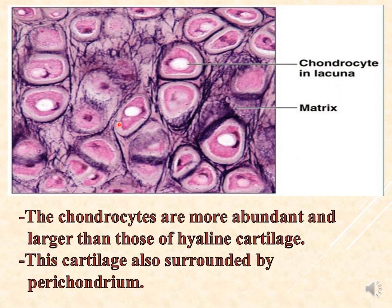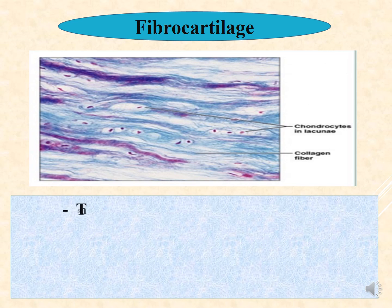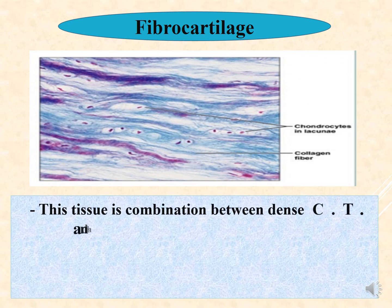Elastic cartilage also differs in the arrangement of chondrocytes: the chondrocytes are more abundant and larger than those of hyaline cartilage. The cartilage is also surrounded by perichondrium with the same layered structure as in hyaline cartilage.